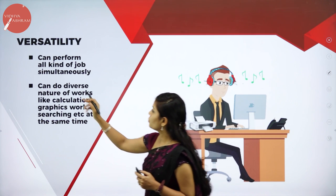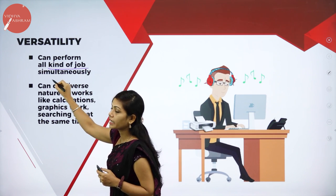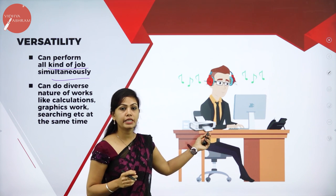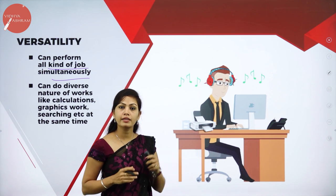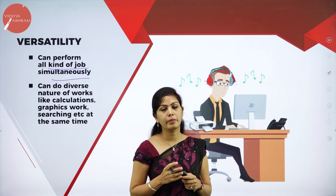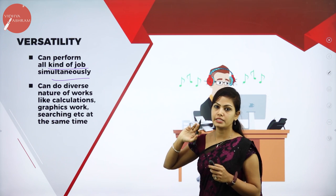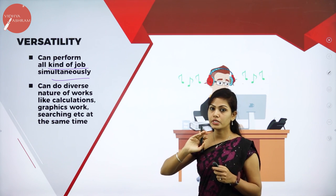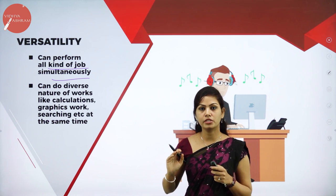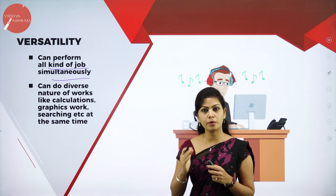The fifth characteristic is Versatility. A computer is a versatile machine — it can perform all kinds of jobs simultaneously. For example, we can listen to music while doing other tasks. This is called versatility.